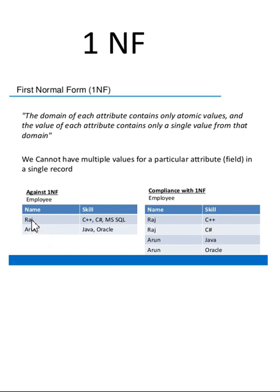For example, the name attribute - Raj is containing multiple values for the single attribute, Aruni is having multiple values. This should not be contained as part of normalization.